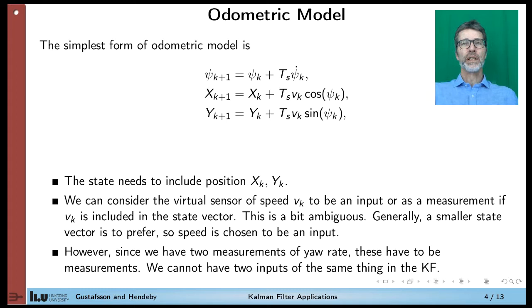We have seen kinematic models before, and the simplest discrete time formulation is that we sum up the yaw rate, multiply the sampling time, add that to the previous yaw angle to get the new yaw angle. And our new position in X and Y coordinates. So for instance, the X coordinate is the sum of the previous X coordinate plus the speed times the sampling interval, multiplied with cosine of the yaw angle, and similarly for the Y coordinate. So we need to include also X and Y in the state vector.